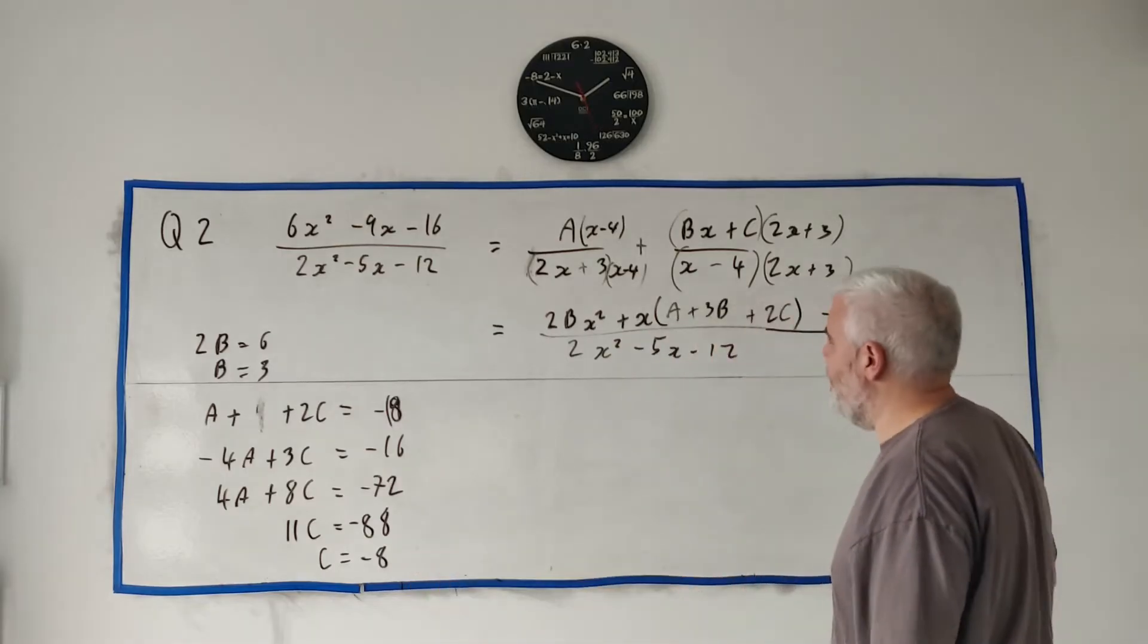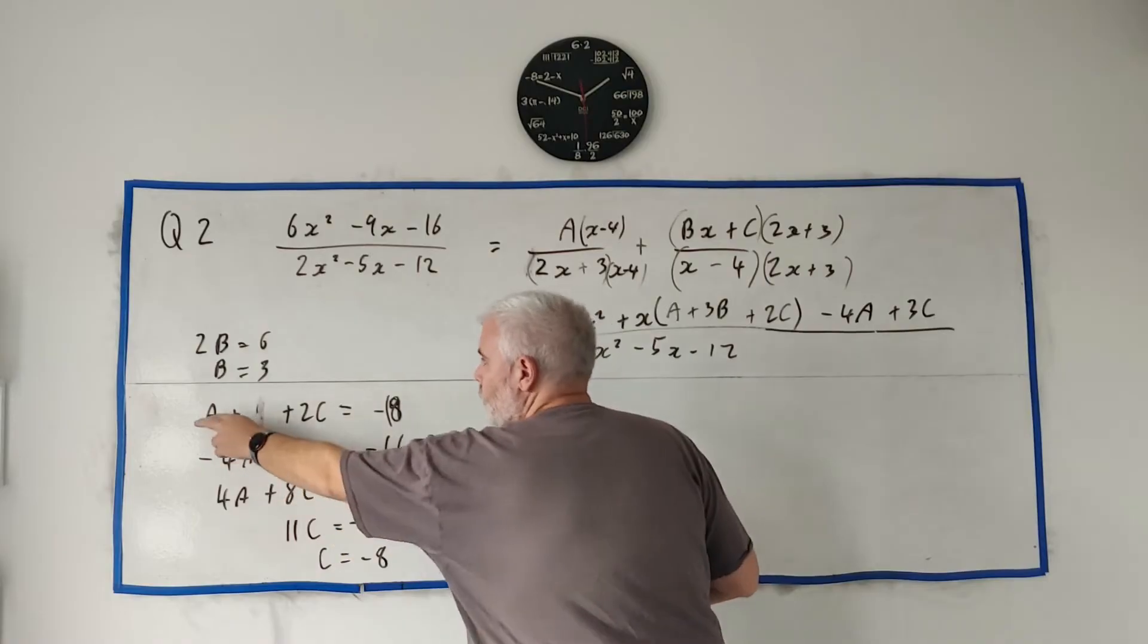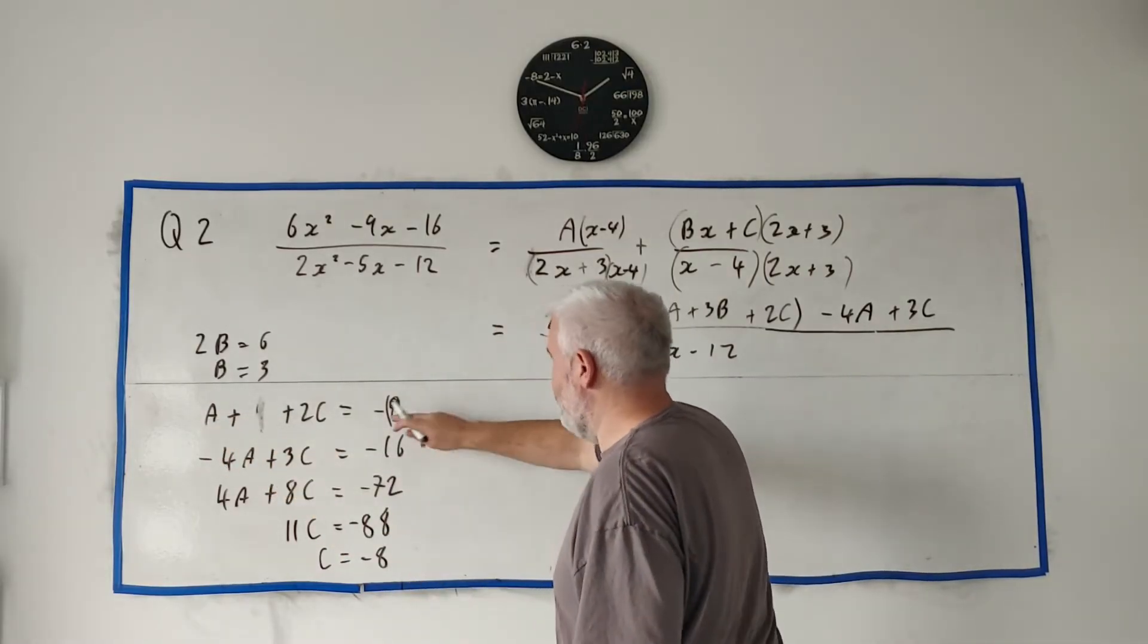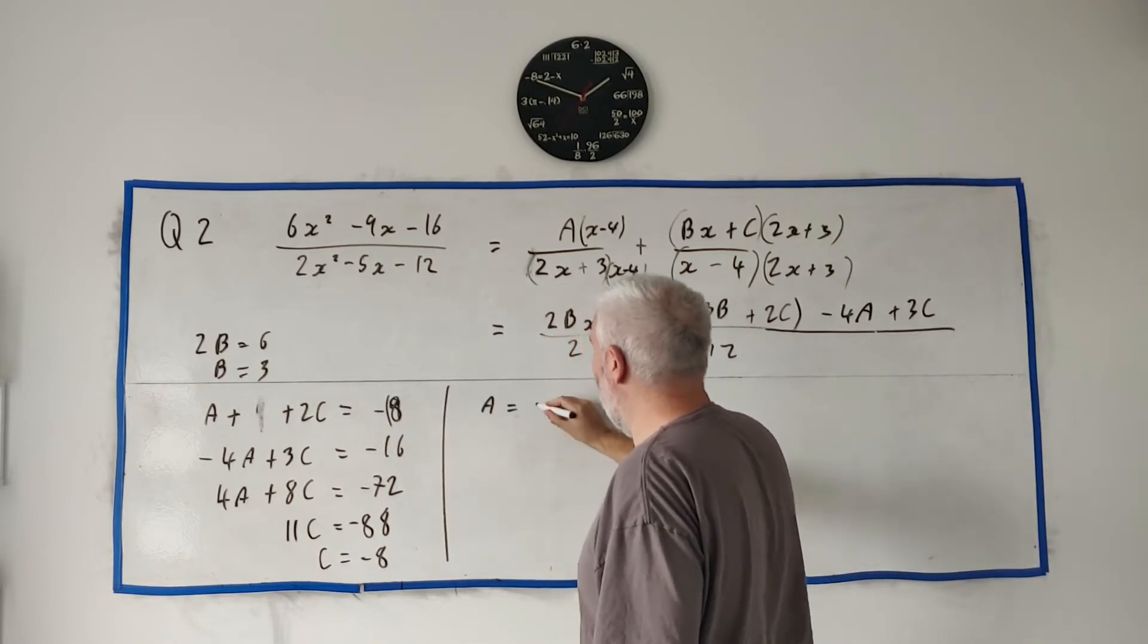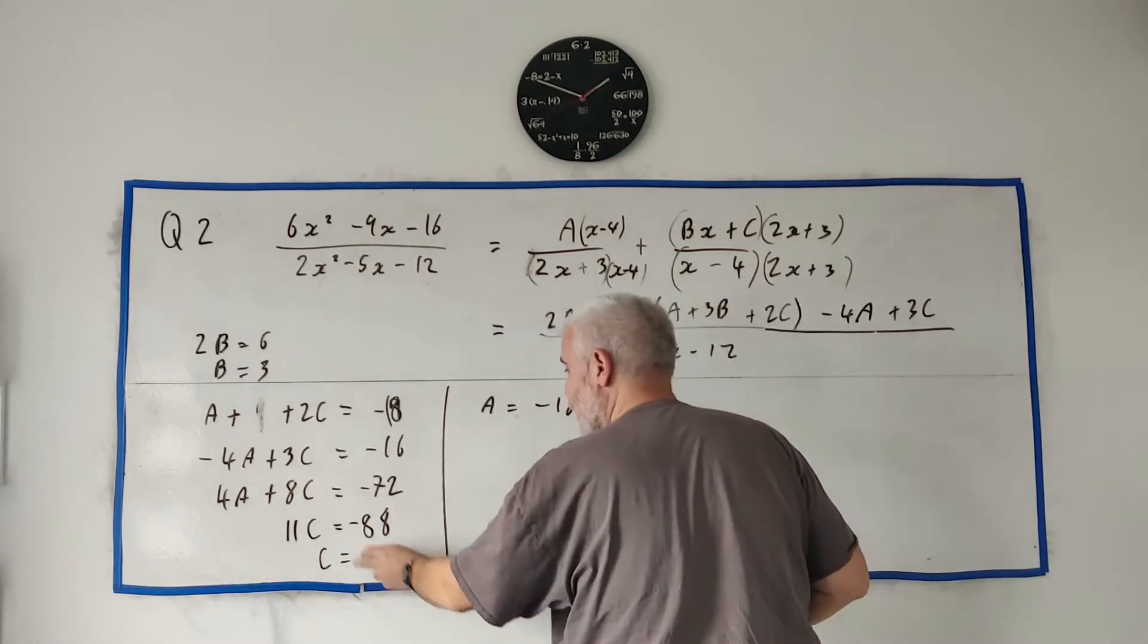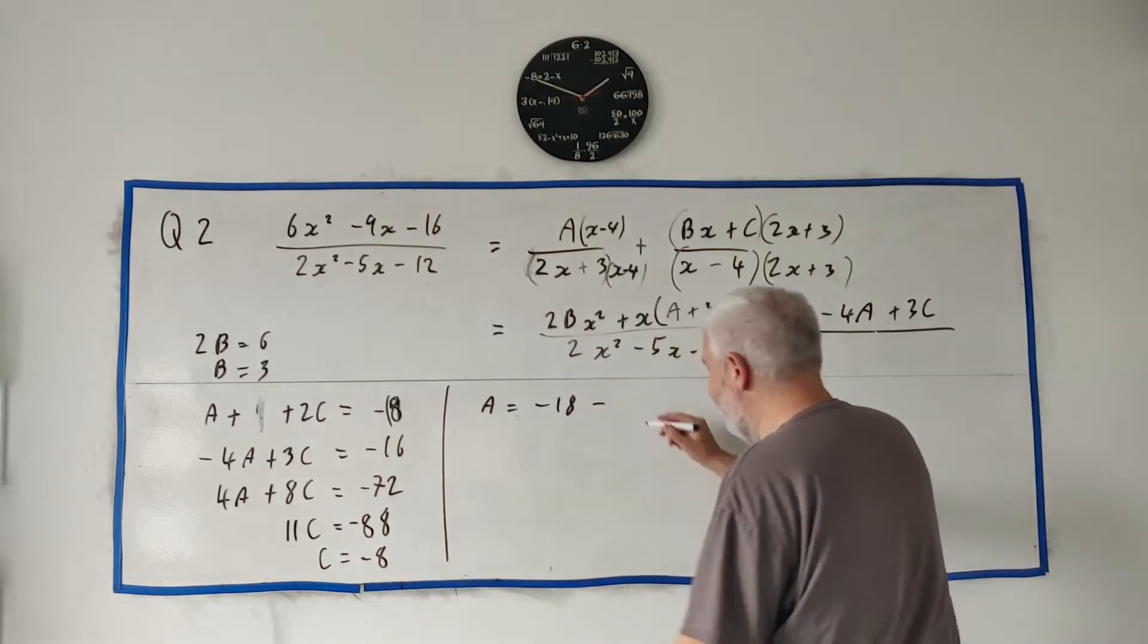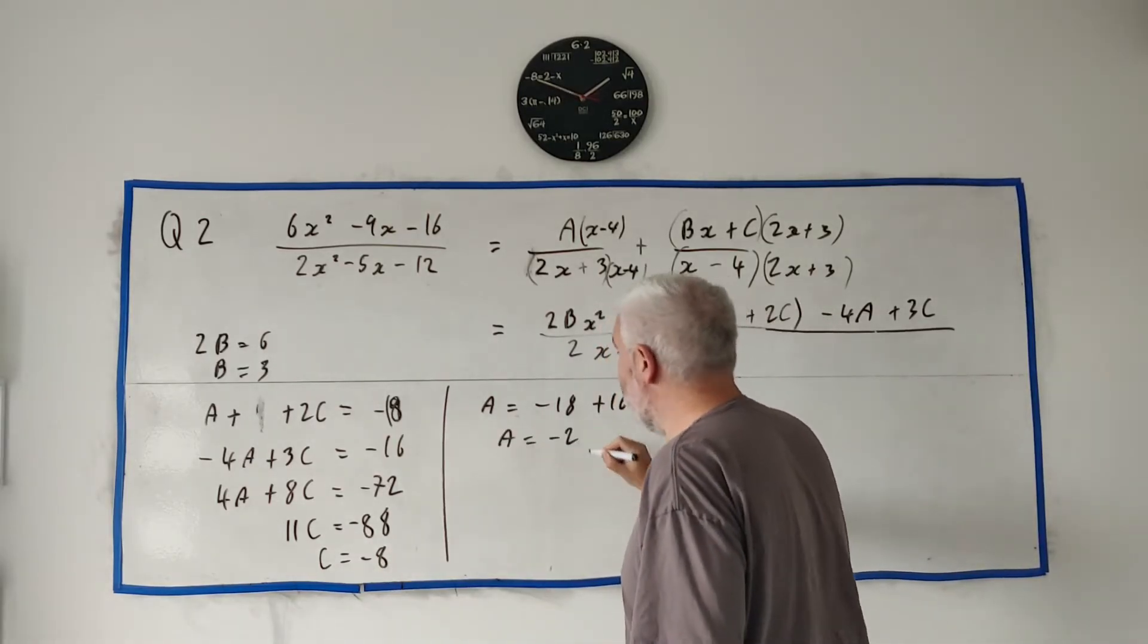88 divided by 11 is 8. And then, we want, which one we have left? A. Take either of these equations. I'll take the top one here. That tells me that A is equal minus 18 minus 2Cs. That's minus 16, or minus minus 16, so that's plus 16. A is equal minus 2.